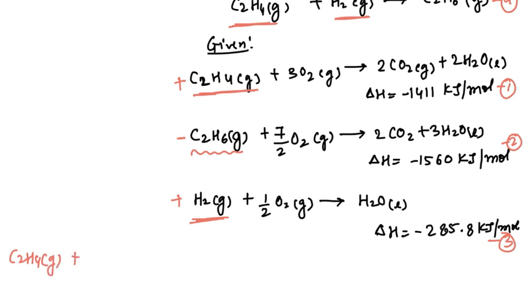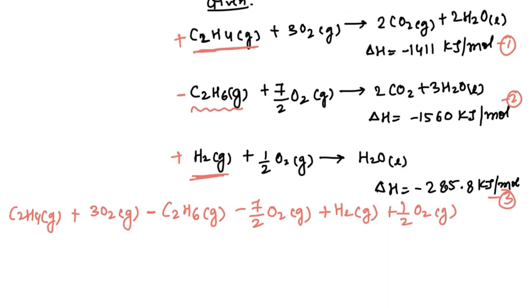C2H4 gaseous form plus 3O2 gaseous form minus C2H6 plus, let me not write minus plus, we will just alter it. On the right hand side we will take and this comes on the left hand side. Let me write simply with negative sign only, C2H6 gaseous form minus 7 by 2 O2 gaseous form plus H2 gaseous form plus half O2 gaseous form. That gives you how much?